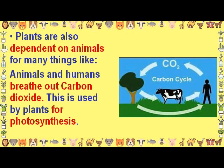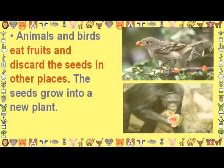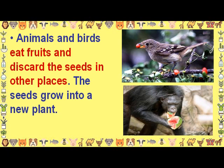Plants are also dependent on animals for many things. Animals and humans breathe out carbon dioxide, which is used by plants for photosynthesis. Plants absorb nutrients from dead and decaying animals in the soil and use these nutrients for making food. Animals and birds eat fruits and discard the seeds in other places, where the seeds grow into new plants.